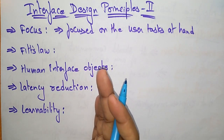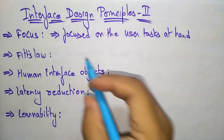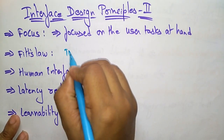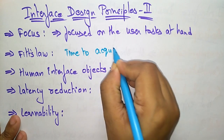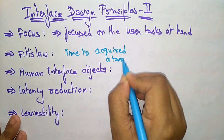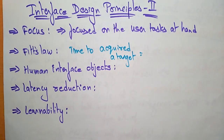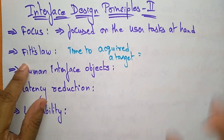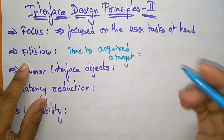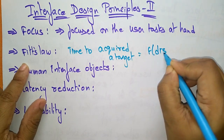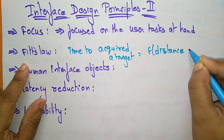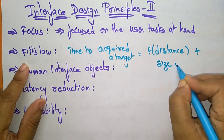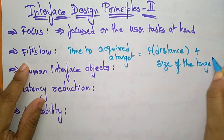What is Fitts' Law? Fitts' Law is about the time to acquire a target. Why are we developing the web app? To achieve something. So the time to acquire a target is a function of distance to and the size of the target.